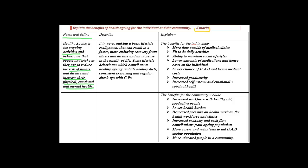That definition would go into your introduction paragraph, and you'd also include that there are benefits to individuals and communities. Moving to the describe section, it involves making a basic lifestyle realignment that can result in a faster, more enduring recovery from illness and disease while increasing quality of life. Some lifestyle behaviors which contribute to healthy aging include healthy diets, consistent exercising, and regular GP check-ups.